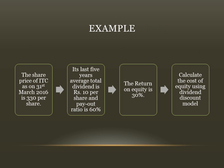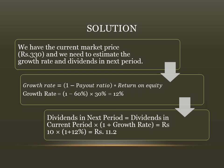Example: the share price of ITC as on 31st March 2016 is rupees 330 per share. Its last five years average total dividend is rupees 10 per share and payout ratio is 60 percent. The return on equity is 30 percent. Calculate the cost of equity using the Dividend Discount Model. The current market price is rupees 330. We need to estimate the growth rate and dividend in the next period.